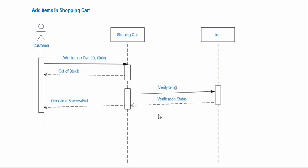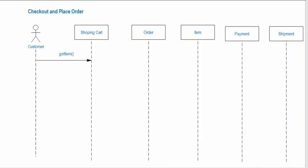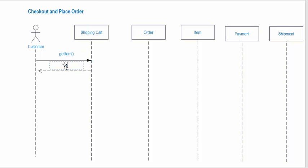Now let's create the sequence diagram for checkout and place order. We have these processes and objects, so let's create the messages between them. The first message will be from the customer side to the shopping cart — that will be 'get items'. The customer will get the items message back from the shopping cart.